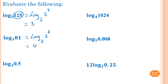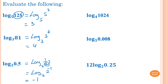Log base 2 of 0.5: 0.5 is one half, so I bring the 2 up to become 2 to the power of negative 1. So this is log base 2 of 2 to the negative 1, and the answer is negative 1.